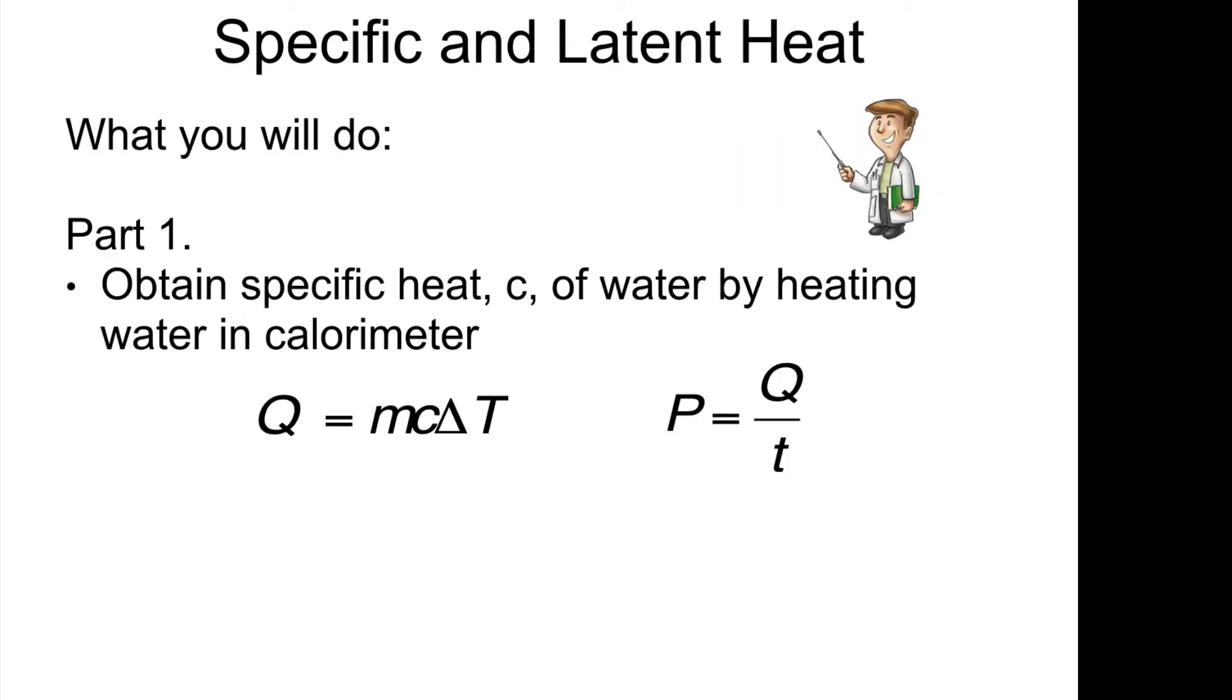And this is how you'll be doing it. So part 1, you'll be focusing on the specific heat of water. So this here is the equation. So you'll be heating the water in a calorimeter using a filament, which is a current going through it, which heats up the filament, which then heats up the water. So the equation here says the heat is equal to the mass times the specific heat, which you'll be measuring, times the change in temperature of the body of water.